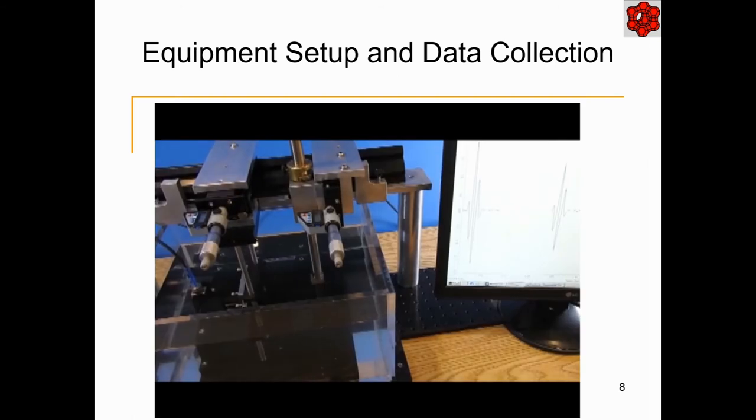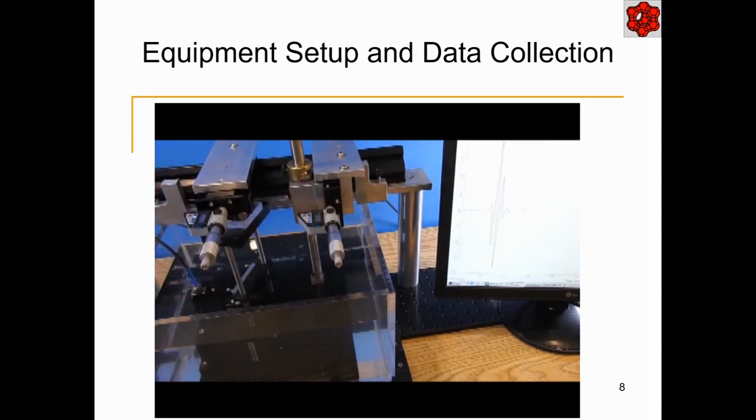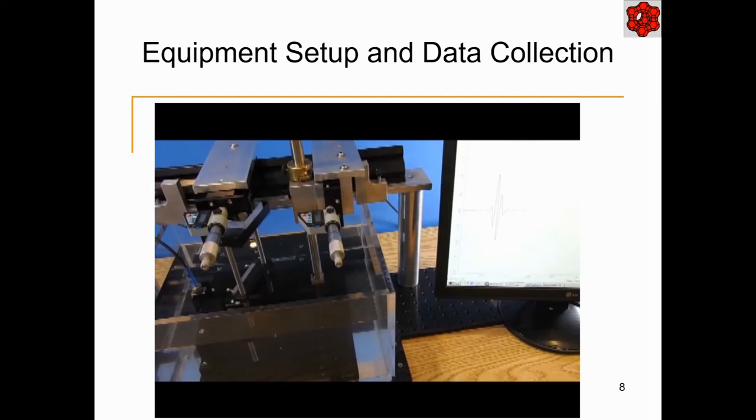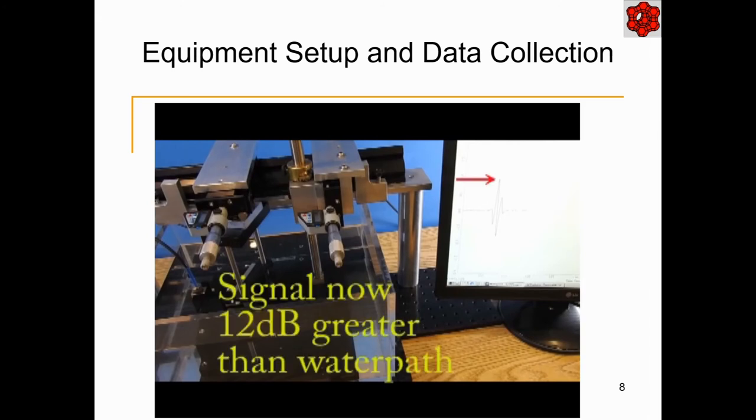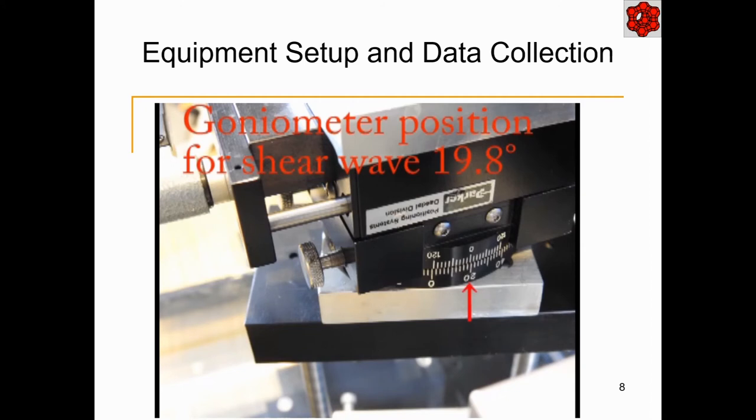Without removing the sample, rotate the goniometer while observing the A-scan signal. Observe the signal from the longitudinal pulse drop as the sample is rotated, and then watch for a new signal to rise at a slightly later time than the longitudinal signal had occurred. This new signal will be the result of the shear mode in the sample for materials that can support a shear mode. Carefully adjust the rotation until the signal is maximized. The L-mode should no longer be present because the maximum shear mode on its own will occur just after the first critical angle. Capture the A-scan and save it to a file noting the angle of rotation and the fact that it is a shear mode waveform.